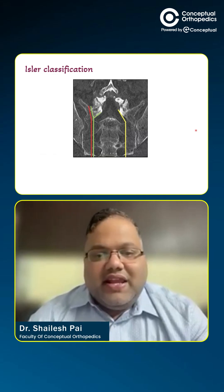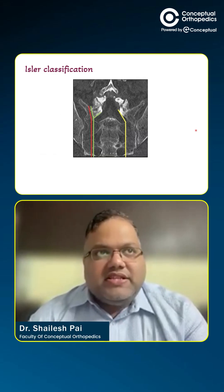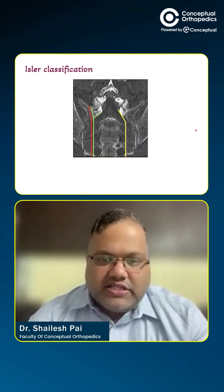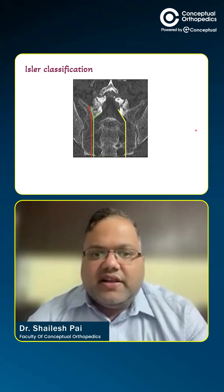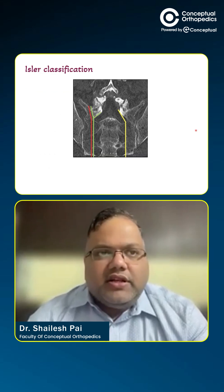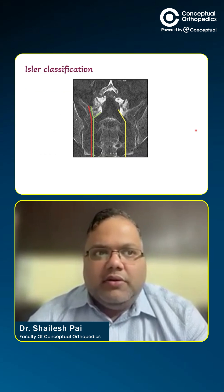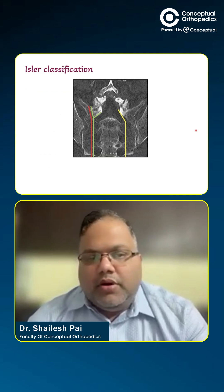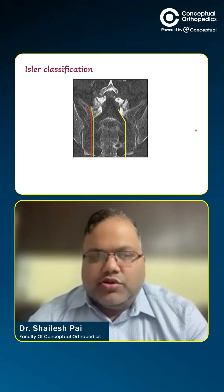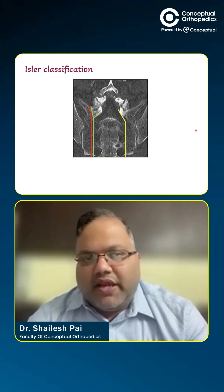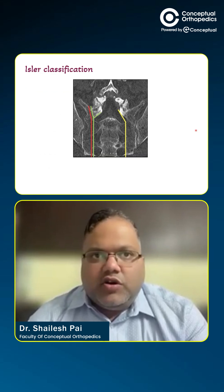The Euler classification is CT-based and applies to vertical sacral fractures. It is important to know whether the fracture is only in the sacrum or has involved the lumbopelvic region, meaning the fracture has extended onto the lumbar spine causing lumbopelvic instability and dissociation.